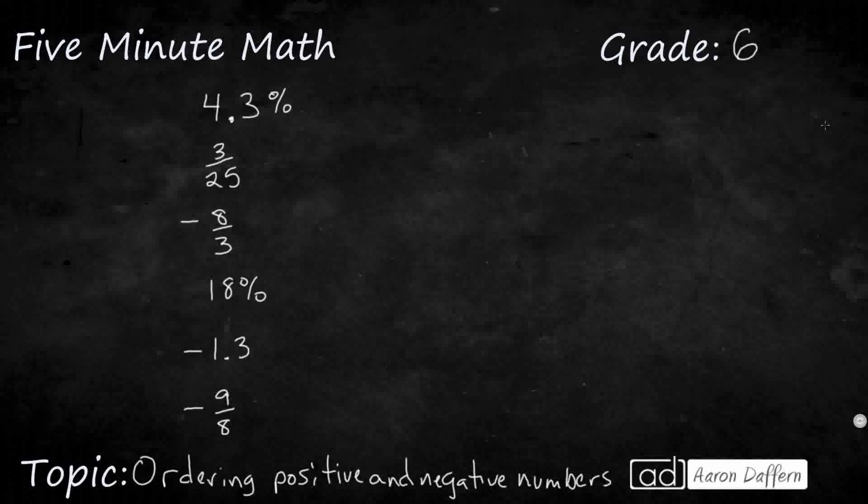Hello, and welcome to 5-Minute Math. Today we are looking at the 6th grade concept of ordering numbers, specifically how we can order numbers that include both positive and negative numbers, and we'll do it in 5 minutes or less.